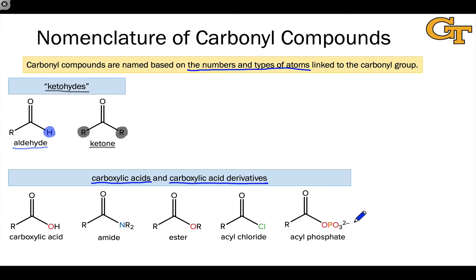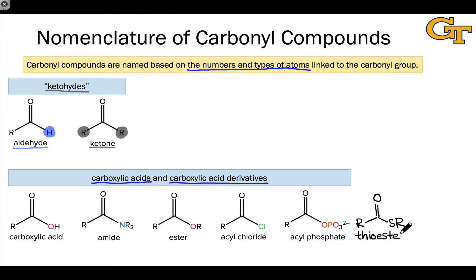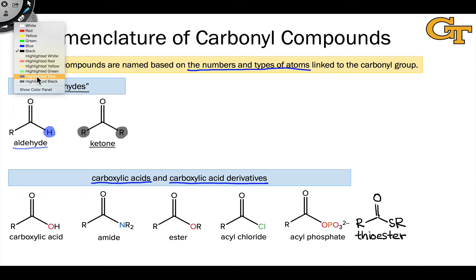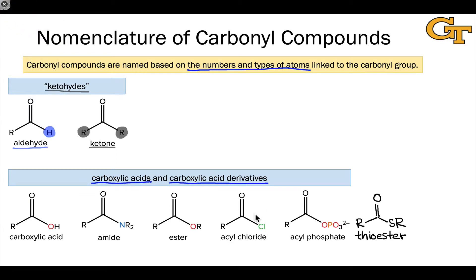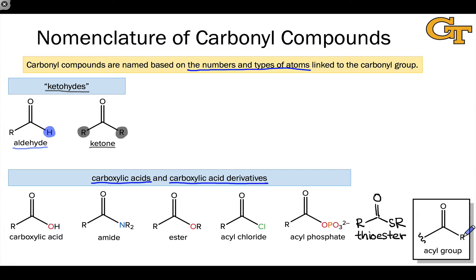I would be remiss if I didn't mention one additional important carboxylic acid derivative, which contains a thiol or sulfide group linked to the carbonyl carbon. This is referred to as a thioester — the sulfur analog of an ester. We'll be seeing these later in a biochemical context. One way to think about the carboxylic acid derivatives is as variations on the theme of what's called the acyl group, which is a name we use to refer to a carbonyl group linked to either a carbon or hydrogen, denoted as R.